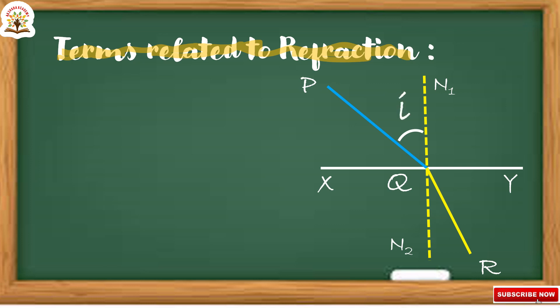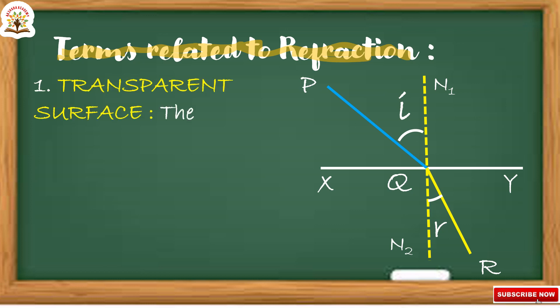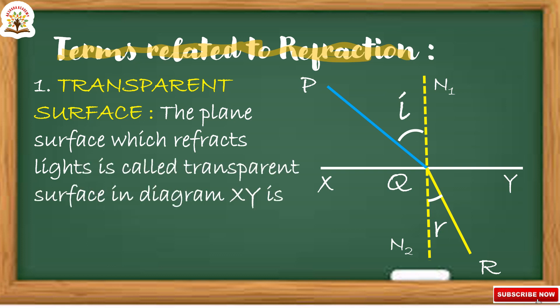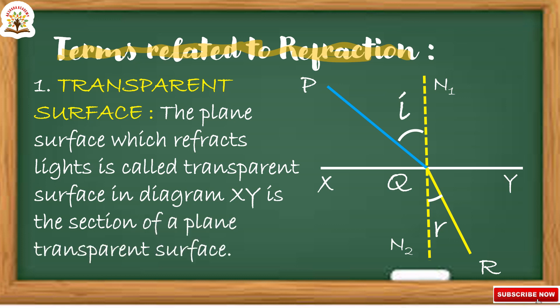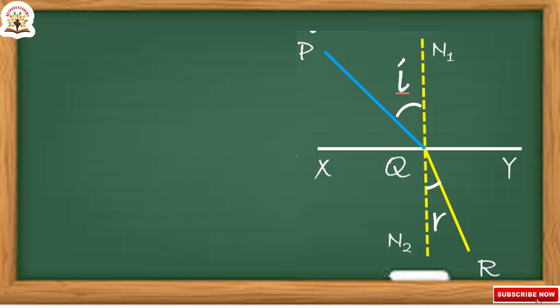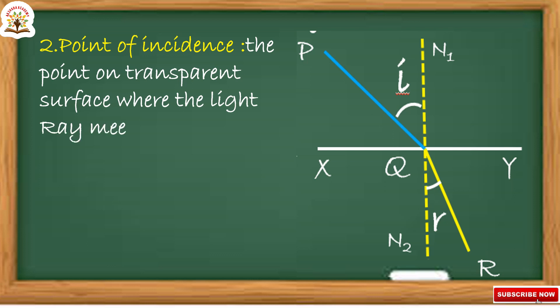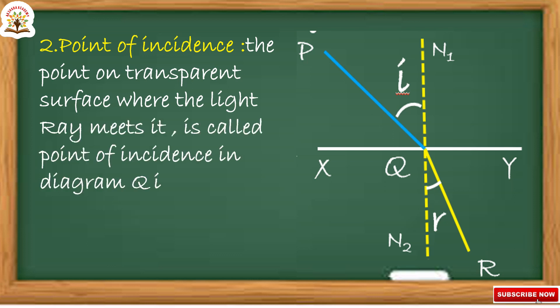The plane surface which refracts light is called the transparent surface; in the diagram, XY is the section of the plane transparent surface. The point on the transparent surface where the light ray meets it is called the point of incidence. In this diagram, Q is the point of incidence.